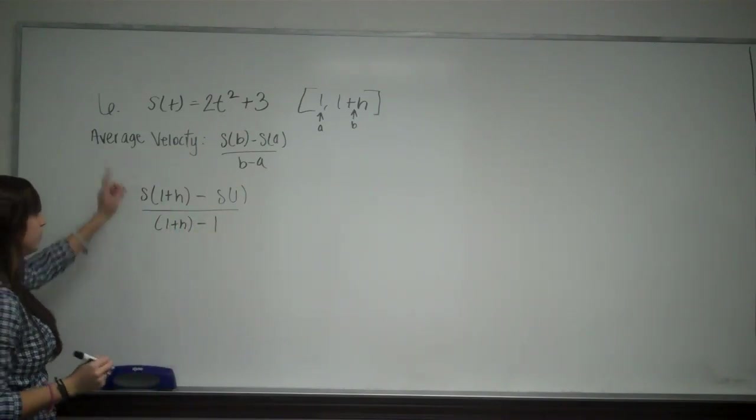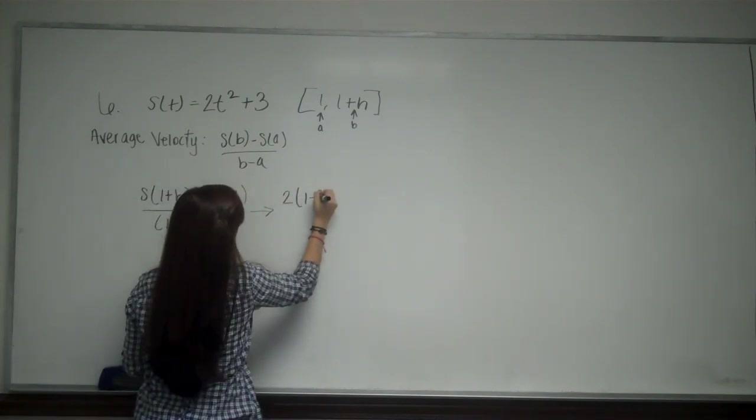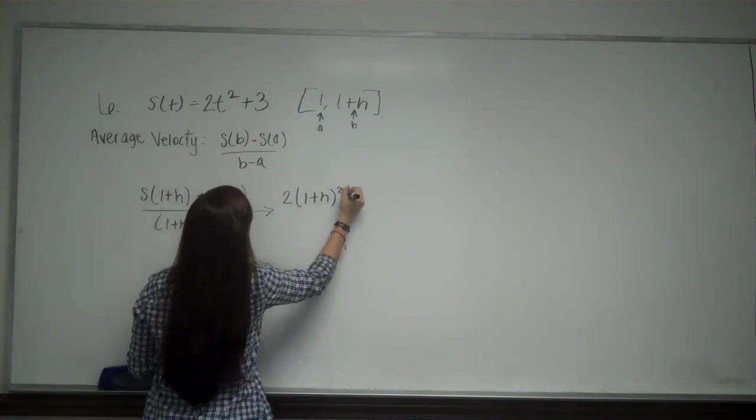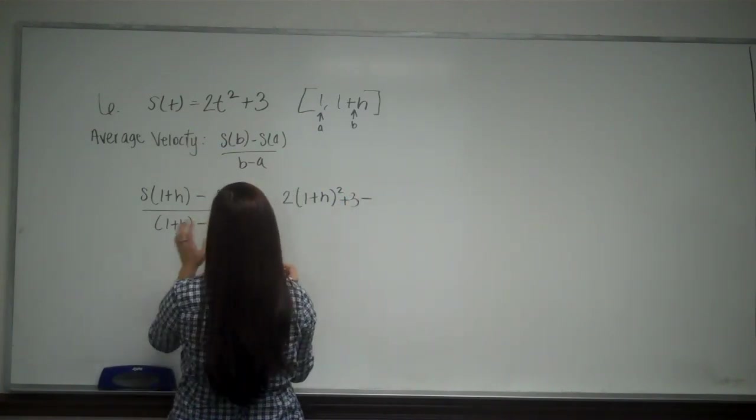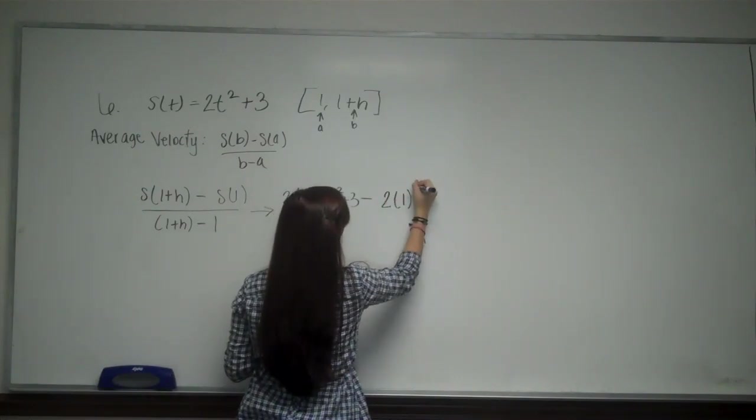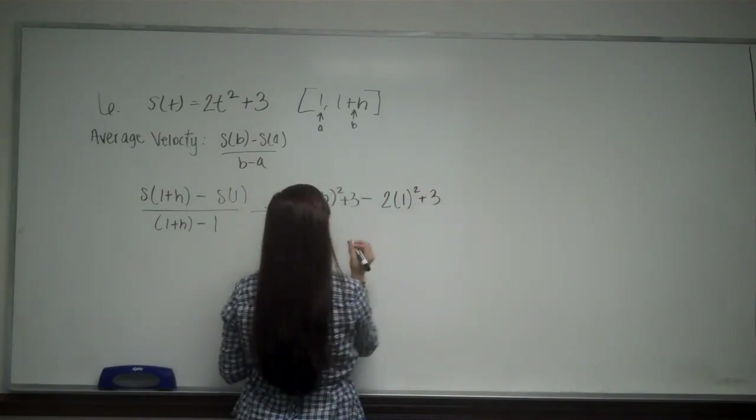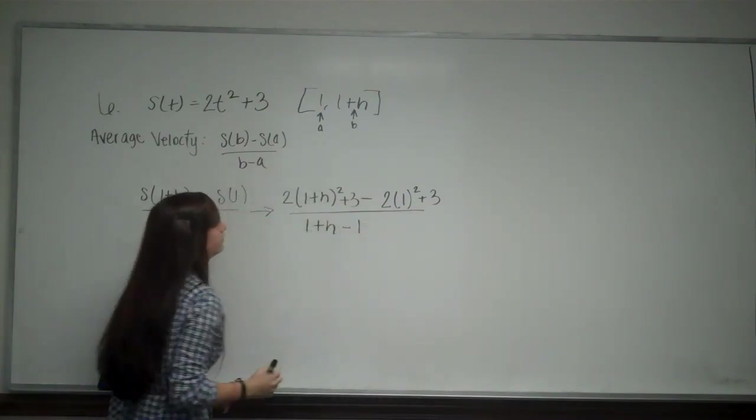When I plug those in, I plug them in for t, and I get 2 times 1 plus h squared plus 3 minus. And when I plug 1 into here, I have 2 times 1 squared plus 3, all over 1 plus h minus 1.